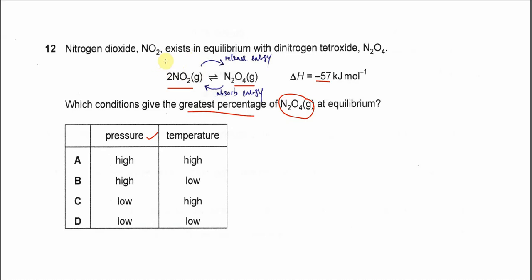We know the left-hand side is 2 moles and the right-hand side is 1 mole. Therefore, equilibrium will shift from left to right to form fewer moles and reduce the pressure.